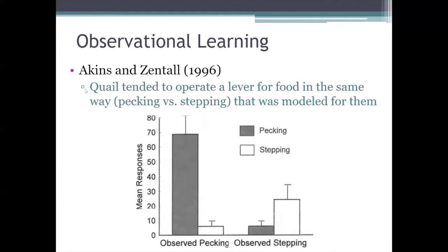More recently, Akins and Zentall reported evidence of observational learning in the quail, a type of bird. They found that quail are much more likely to operate a lever for food in whatever way they saw being successful for a model quail. Some observers saw models trained to peck the lever; others saw models trained to step on it. The observers could operate the lever either way, but they tended to do whatever they had observed the model doing. Similar results have been found with other species too, like rats, chickens, and chimpanzees.